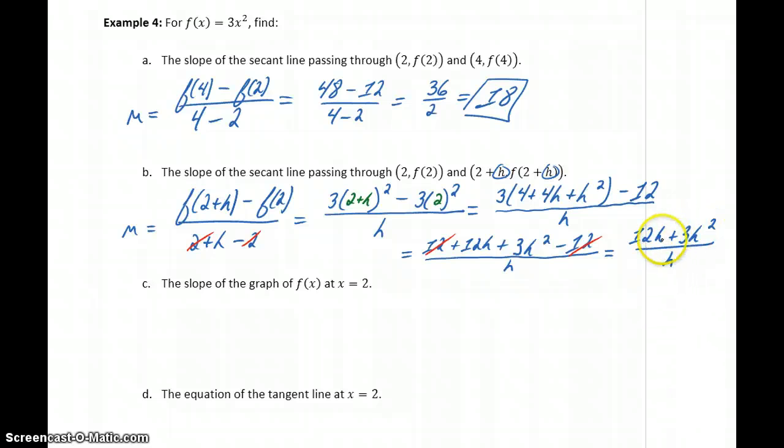Now, since in the numerator that h is common between those two terms, we can factor that out, leaving us with (12 + 3h) divided by h. So h over h will cancel, leaving us with the slope of our secant line as 12 + 3h.